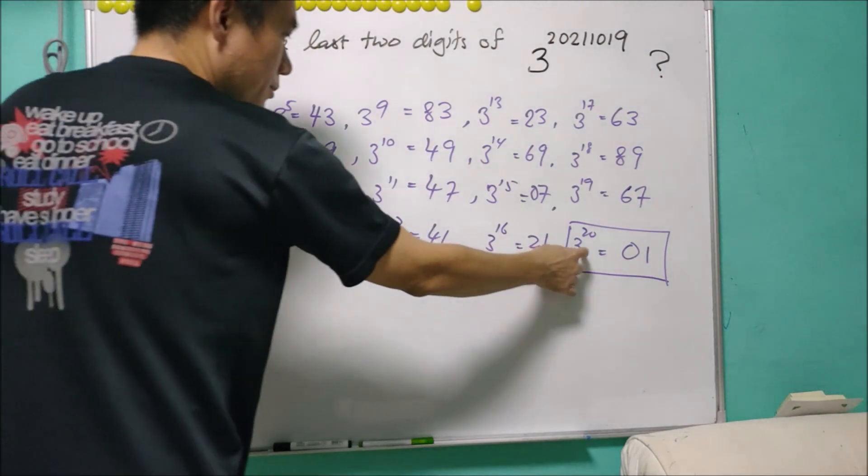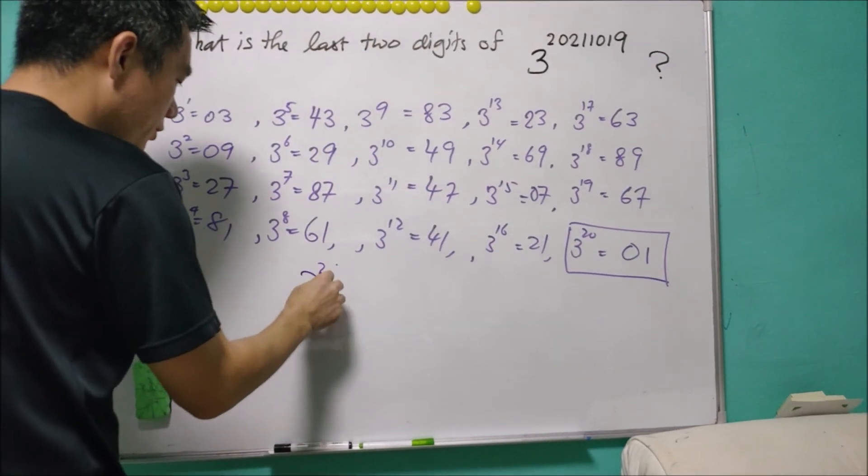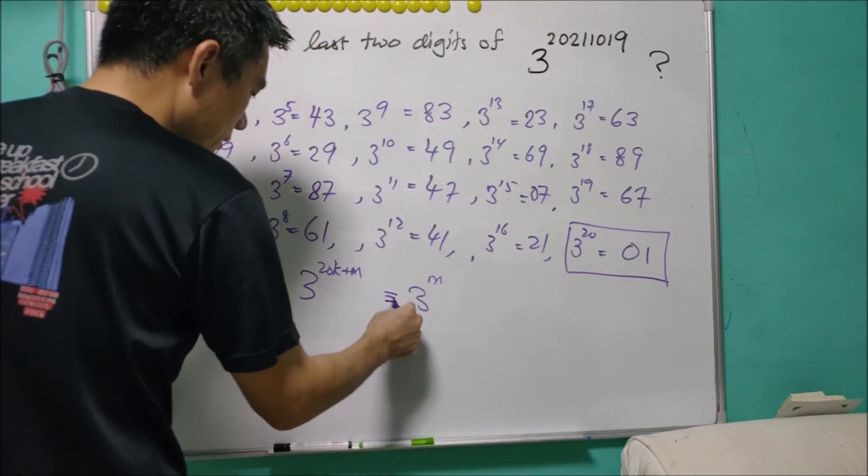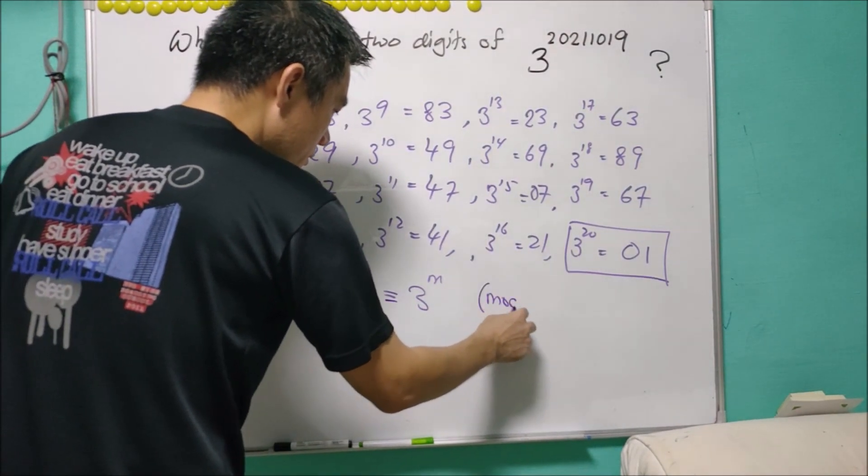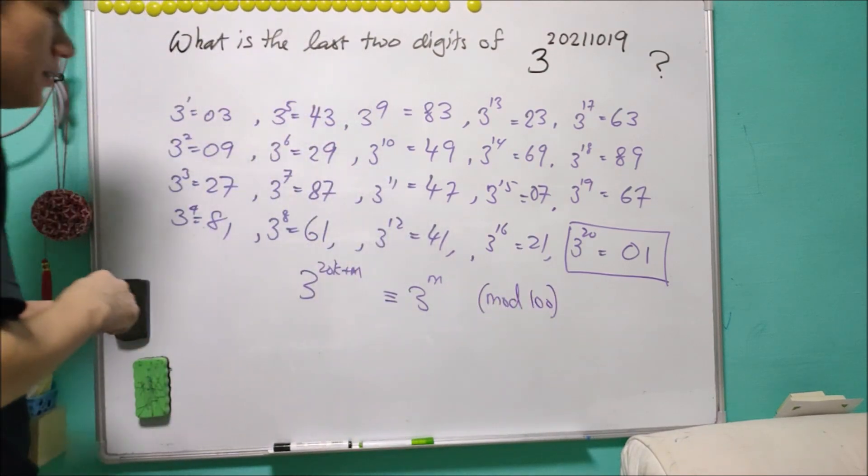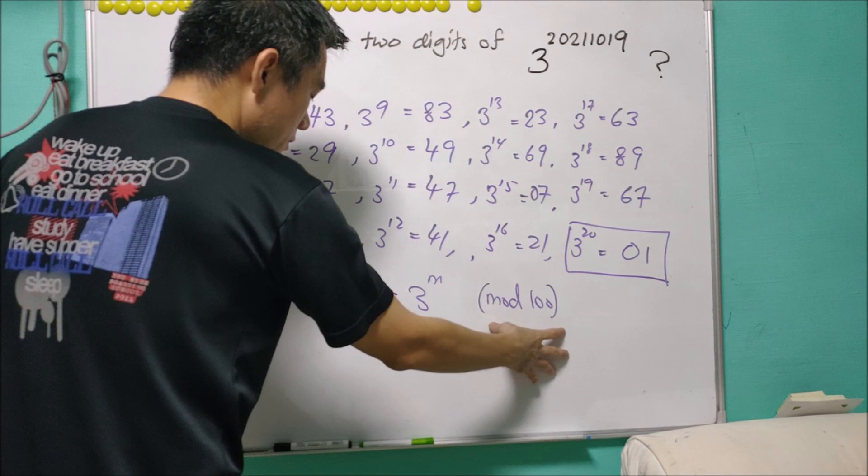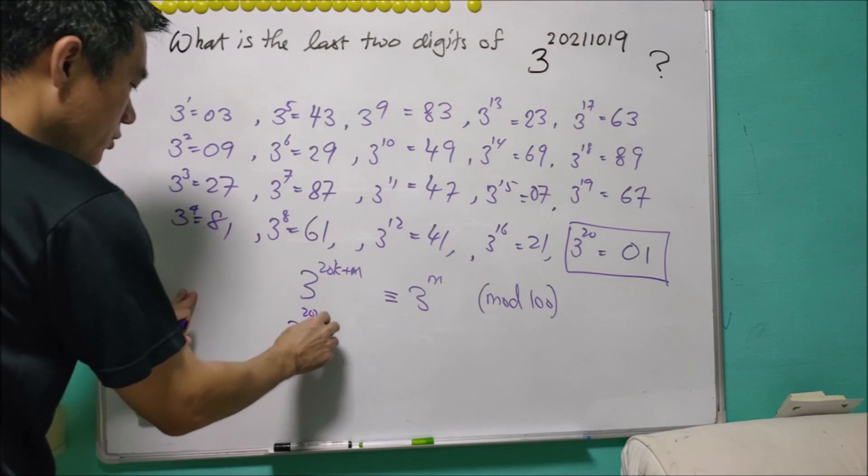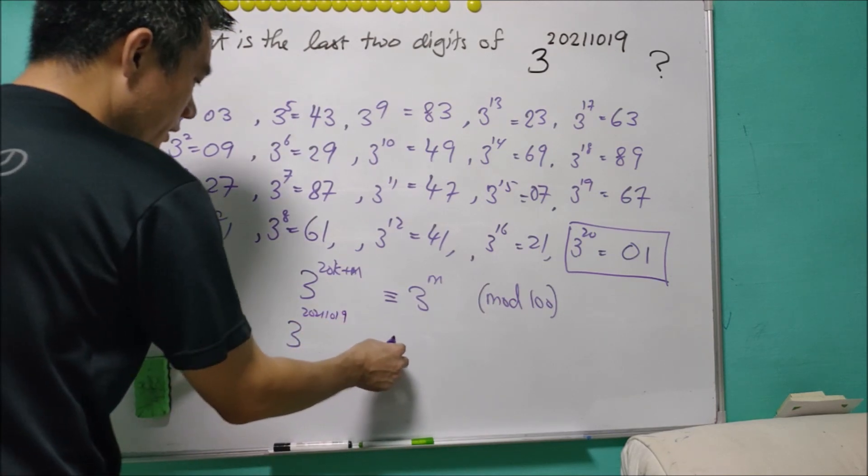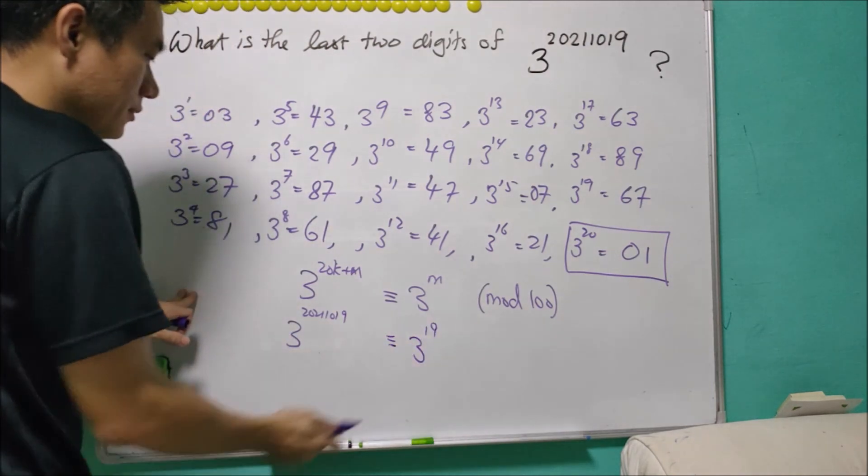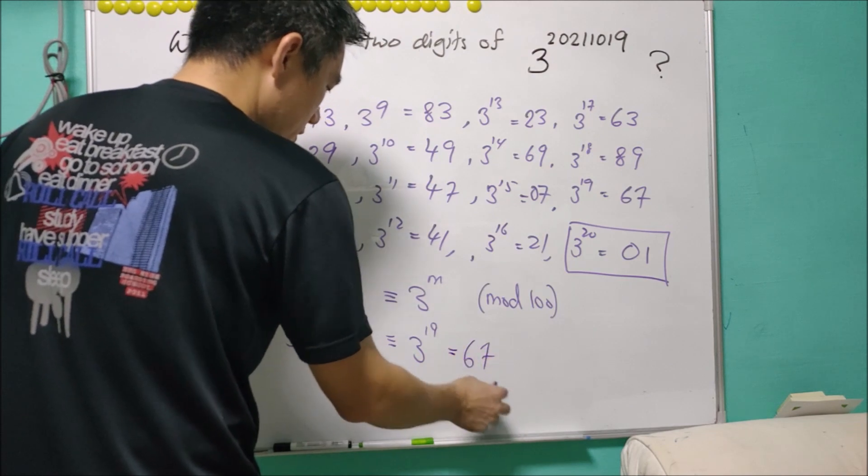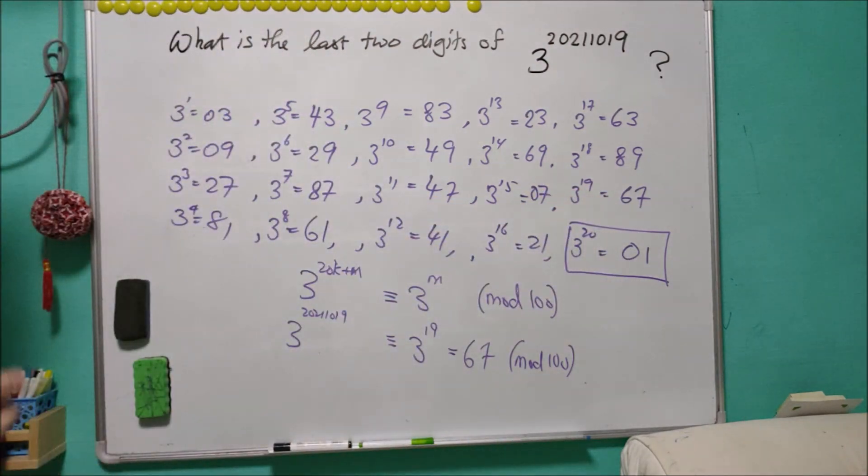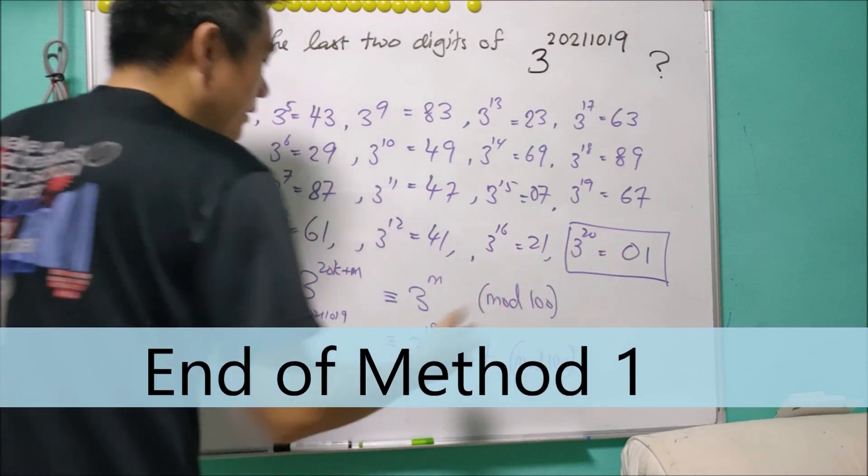Now note that 3 to the power of 20 is 01. So it means that 3 to the power of 20k plus m will equal to 3 to the power of m. In more technical terms, we'll say that these two numbers are congruent mod 100. So the last two digits of these two numbers will be the same where m,n is positive integer. So what we have here is 3^2021019 will be congruent to 3^19. And 3^19, as you see, it is equal to 67 mod 100. And therefore, this will be the answer.